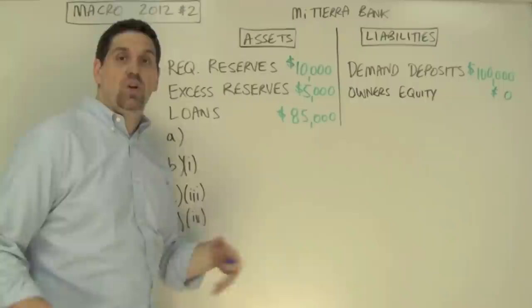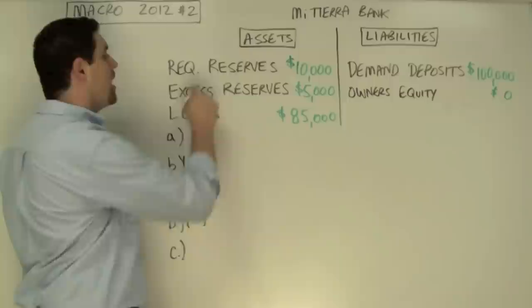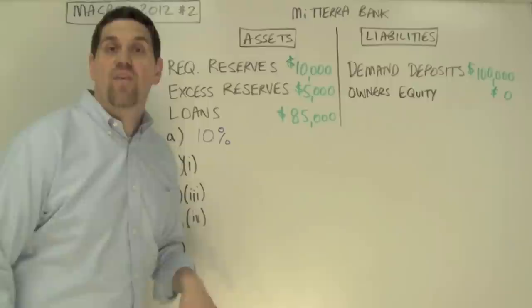Question A starts off by asking a simple question: what is the reserve requirement set by the government? If this bank has $100,000 of deposits and it's holding $10,000 in required reserves, the reserve requirement must be 10%. That's the money they cannot loan out.